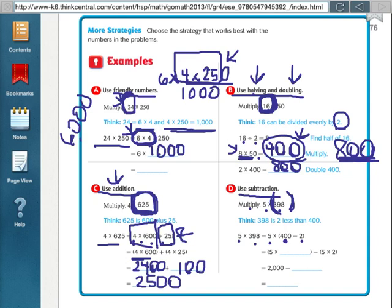Then our problem will be 5 times 400 minus, since it's a subtraction problem, minus 5 times 2. They've already done 5 times 400 for us, and they said that's 2,000 minus 5 times 2 is 10. So, 2,000 minus 10 is 1,990. Those are the different properties that you can use to solve multiplication problems.